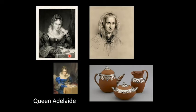Adelaide's two daughters, Charlotte and Elizabeth, died in infancy, and the throne passed to William's niece Victoria. During Victoria's reign, Adelaide lived at Bushy House in Teddington, West London. This portrait of 1849 shows her as Queen Dowager Adelaide — she was born in 1792, and this portrait was taken in the year of her death.